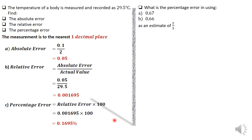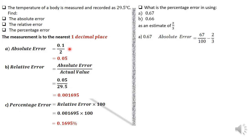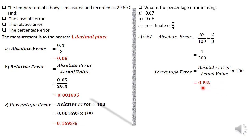The last example: what is the percentage error in using 0.67 or 0.66 as an estimate of two-thirds? For part A, 0.67: the absolute error is found by subtracting 2/3 from 0.67, which gives 1/300. The percentage error is the absolute error divided by the actual value times 100, which is (1/300) divided by (2/3) times 100, giving 0.5%.